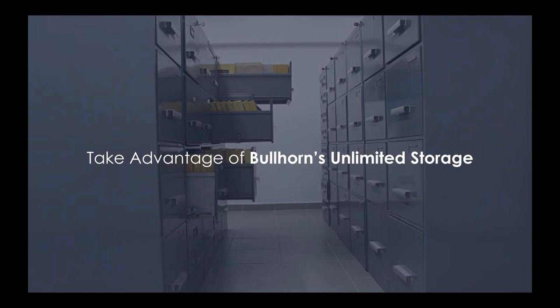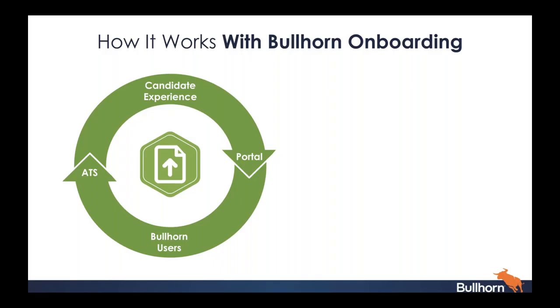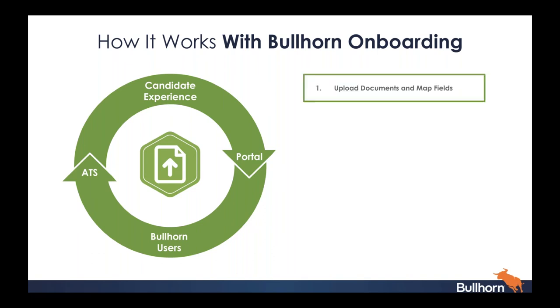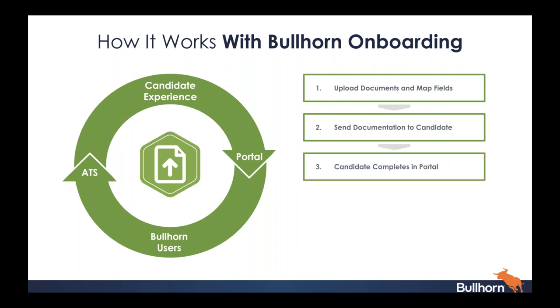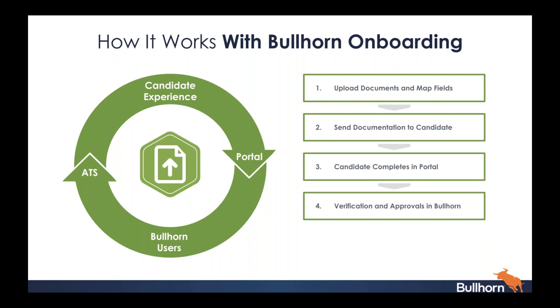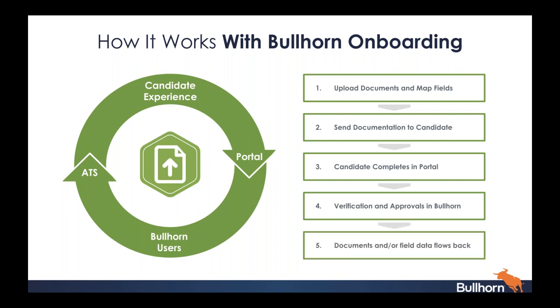Mary Kay is going to mention in the demo how you can have documents flow exactly where you need them to, and there's a new feature with more information that can flow as well. How it works: it's a seamless experience between the candidate and Bullhorn users. You can upload your documents, map your fields, send documentation to the candidate, and have any party in your organization do that. The candidate completes these in the web portal, you can put in verification and approval stages, and that document and field data can flow back — removing the need for double data entry.